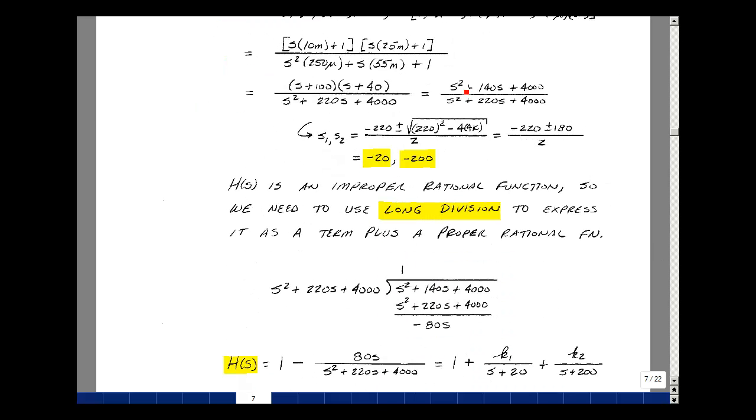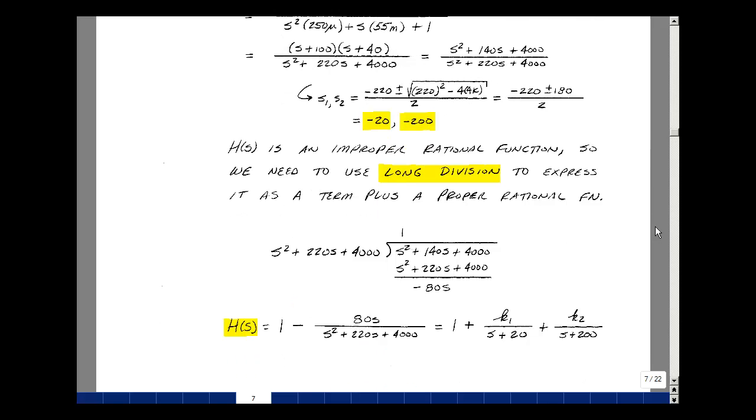Now h(s) has s squared as the highest power divided by likewise s squared, so it's an improper rational function. I need to do a long division to express it in terms of a term plus a proper rational function. Taking the denominator s squared plus 220s plus 4,000 and dividing into the numerator s squared plus 140s plus 4,000, we get 1 with a remainder of minus 80s. So we can write h(s) as 1 plus minus 80s divided by s squared plus 220s plus 4,000. Now we can do a partial fraction expansion: 1 plus k1 divided by s plus 20 plus k2 divided by s plus 200.